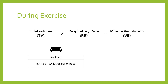Here are some numbers to illustrate. At rest, you breathe roughly 15 times per minute, and the average tidal volume for an adult is approximately 500 mL (0.5 litres). Multiplying those together: 0.5 litres × 15 breaths per minute means at rest we are exchanging approximately 7.5 litres of air per minute.